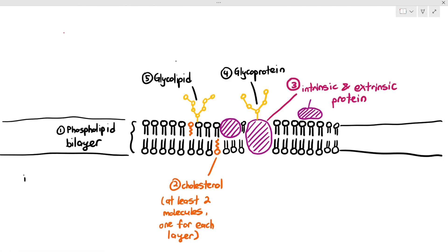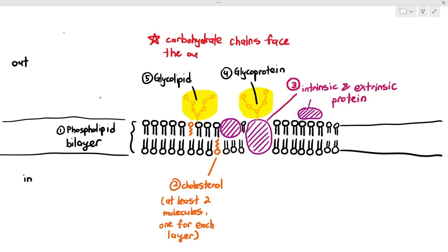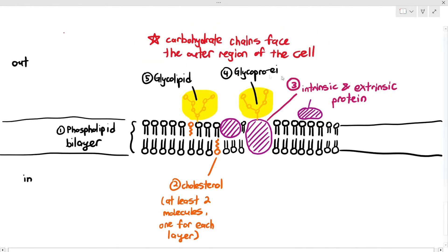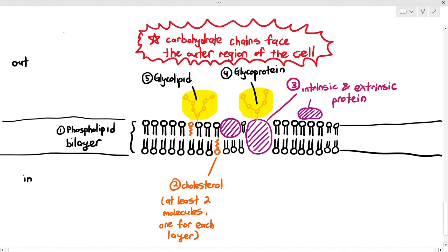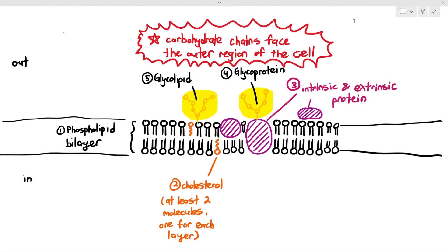When talking about glycoproteins and glycolipids, the carbohydrate chain faces the outer part of the cell. The reason is that hormones come from outside, so the carbohydrate chains must face the outer region to receive them.